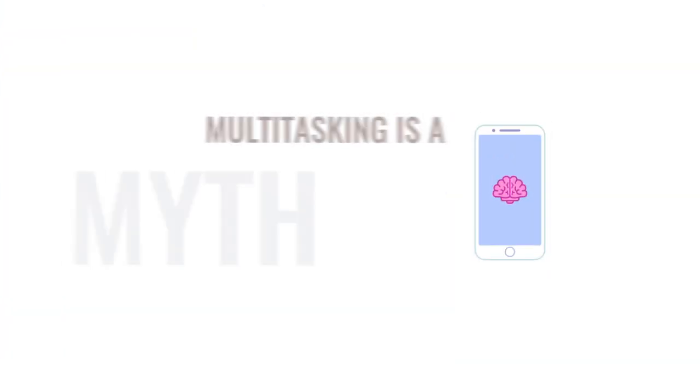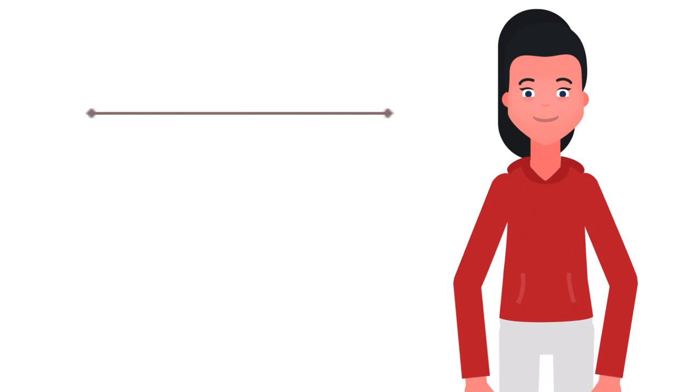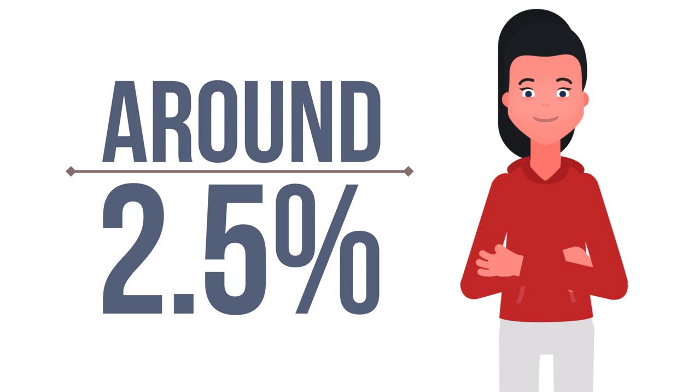Finally, and most important for students, multitasking is a myth, regardless of what smartphone manufacturers want you to believe. A very small percentage of humans, around 2.5%, can consciously do two things at once without decreasing performance.